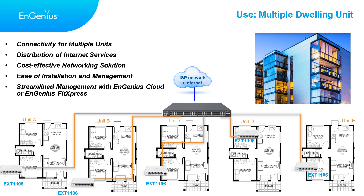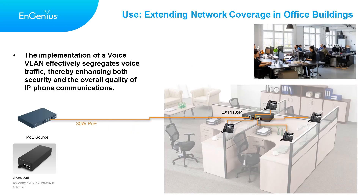Simplified onboarding and configuration templates eliminate the need for on-site visits, reducing deployment time and expense. Switch extenders allow both data and power to be transmitted over a single Ethernet cable, eliminating the need for a separate power source and making installation simpler. Voice traffic requires higher priority and lower latency compared to regular data traffic. By segregating voice traffic onto a dedicated VLAN, network administrators can apply QoS policies to prioritize voice packets, ensuring better call quality and minimizing latency. Voice VLANs help manage bandwidth effectively by separating voice and data traffic, preventing congestion from data-heavy applications.